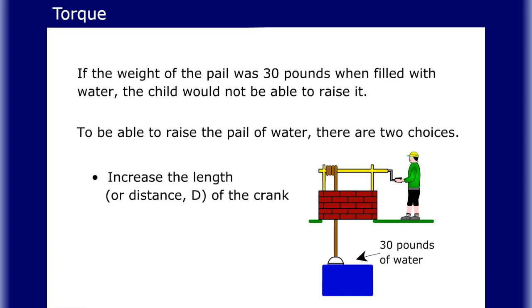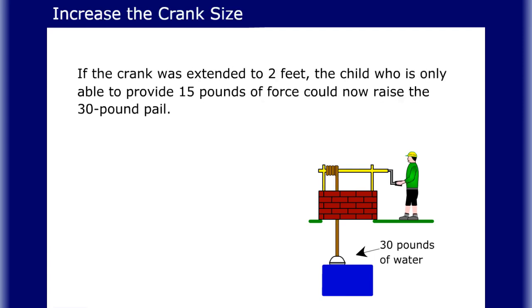Either increase the length of the crank or apply more force to the one-foot crank. Let's take a closer look at these two choices. If the crank was extended to two feet, the child who is only able to provide 15 pounds of force could now raise the 30-pound pail.